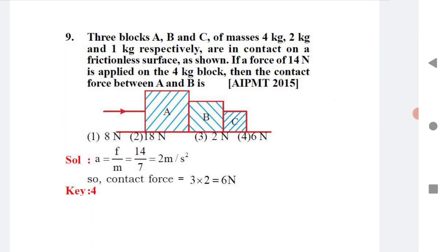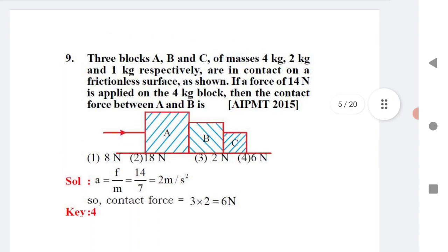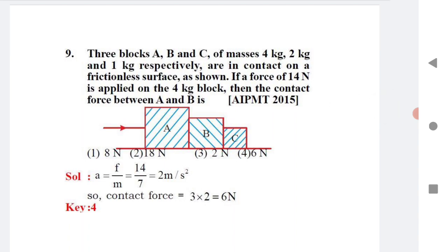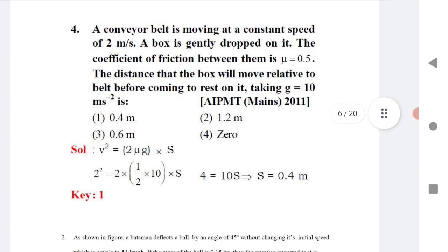Question 7: Three blocks A, B, C are in contact on a frictionless surface. A force is applied on the 4 kg block. First find acceleration: a = F / (total mass of all three objects). Then find the contact force using the acceleration. Simple substitution gives the answer.